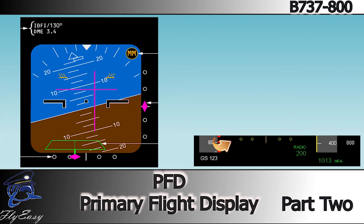At low radio altitudes with the Autopilot or Flight Director engaged, the localizer scale turns amber and the pointer flashes to indicate excessive localizer deviation. Similarly, if LNAV is engaged with localizer armed, the scale turns amber and the pointer flashes if the localizer is not captured.